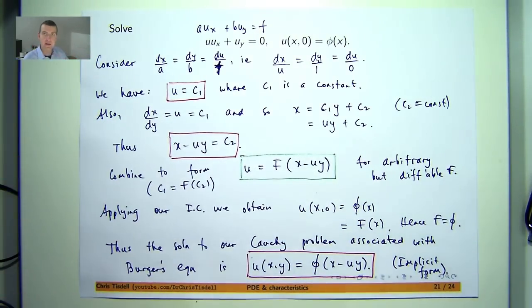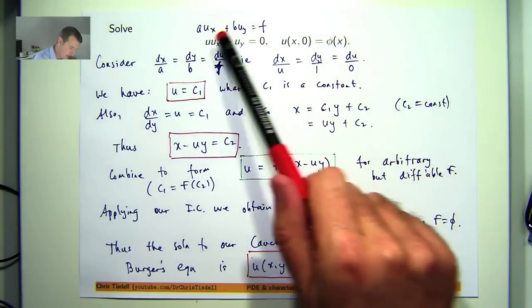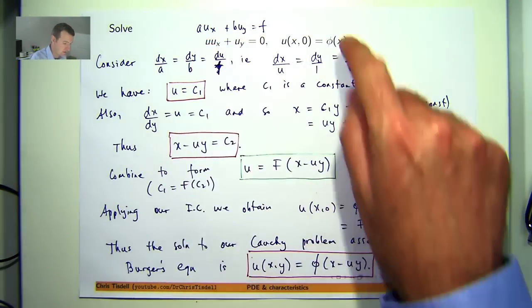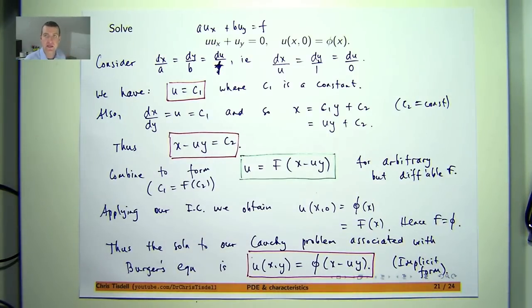Now if you want to check to see that this really does satisfy the PDE, you can differentiate it using the chain rule or implicit differentiation and show that this holds, and then check the Cauchy data or the initial condition.